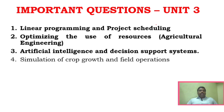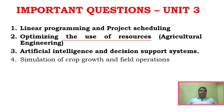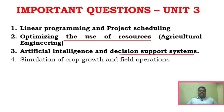For Unit 3, the three important areas are: linear programming and project scheduling, optimizing the use of resources, optimizing methods in agricultural engineering, and Artificial Intelligence Decision Support Systems.